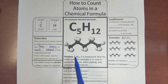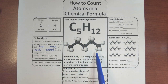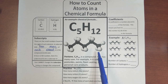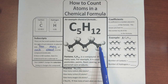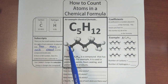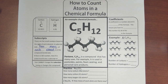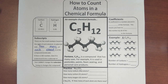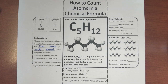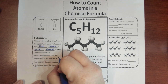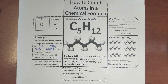Technically the subscript tells how many atoms of each element are in the compound. Here we have five carbon atoms and twelve hydrogen atoms. In the diagram you can count them — the black ones represent carbon, one through five, and the white ones represent hydrogen, one through twelve. As compounds get more complex, it's much easier to just use the subscript. If there is no number written, we assume the subscript is one.